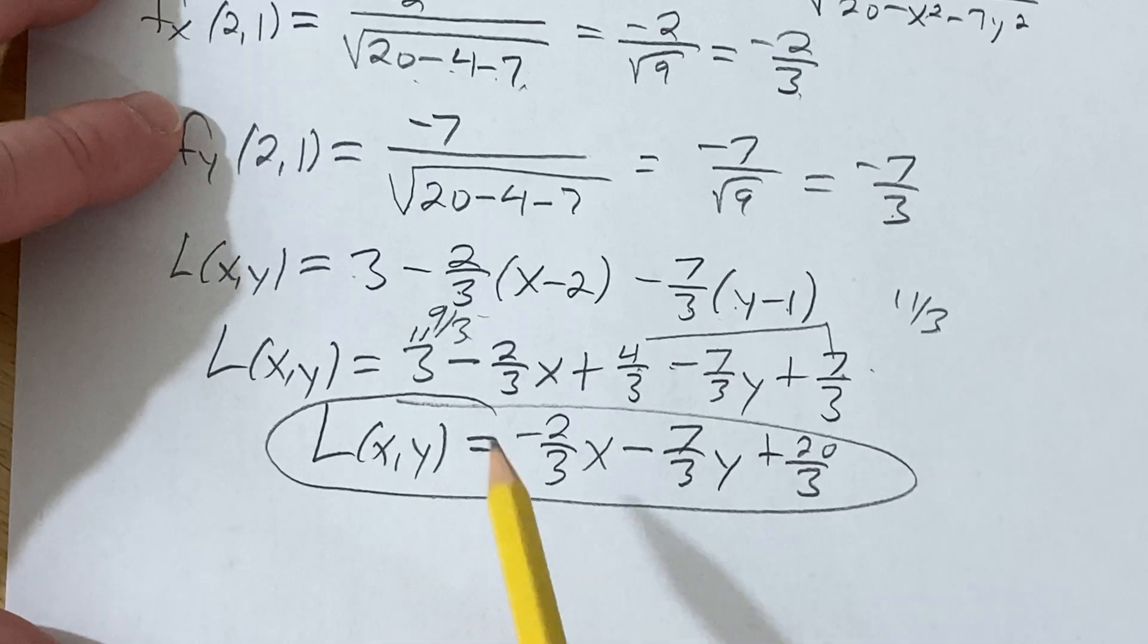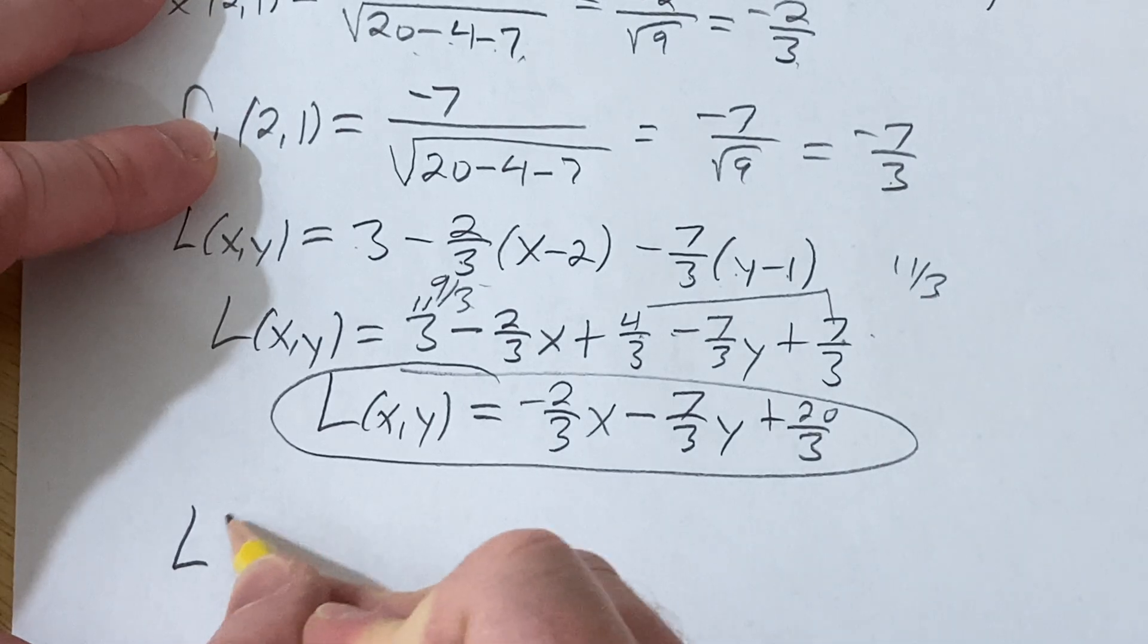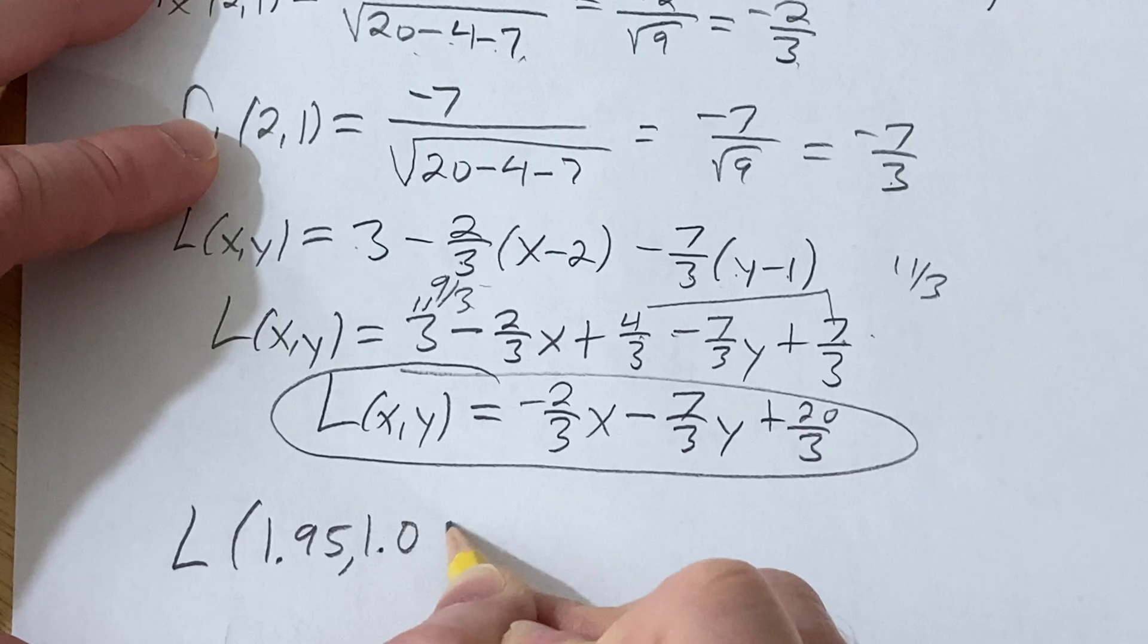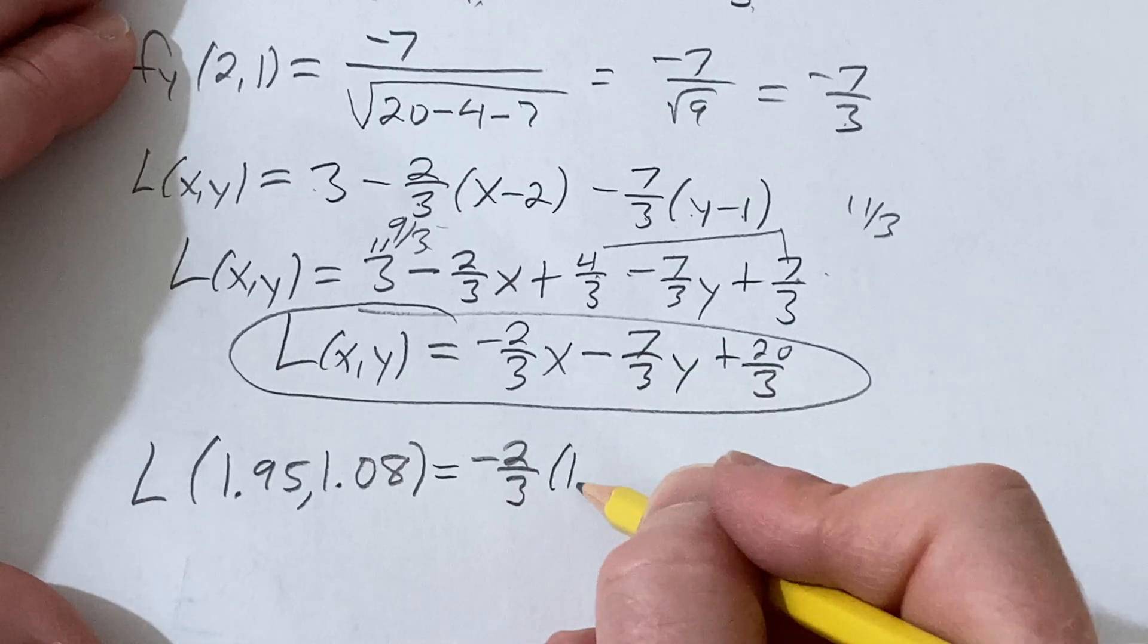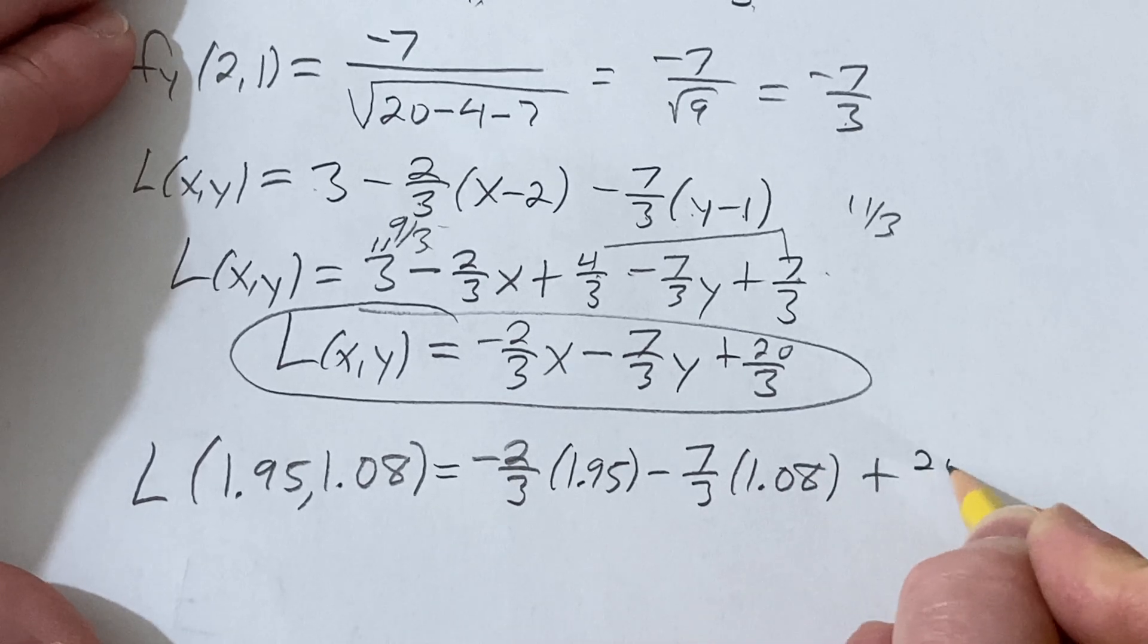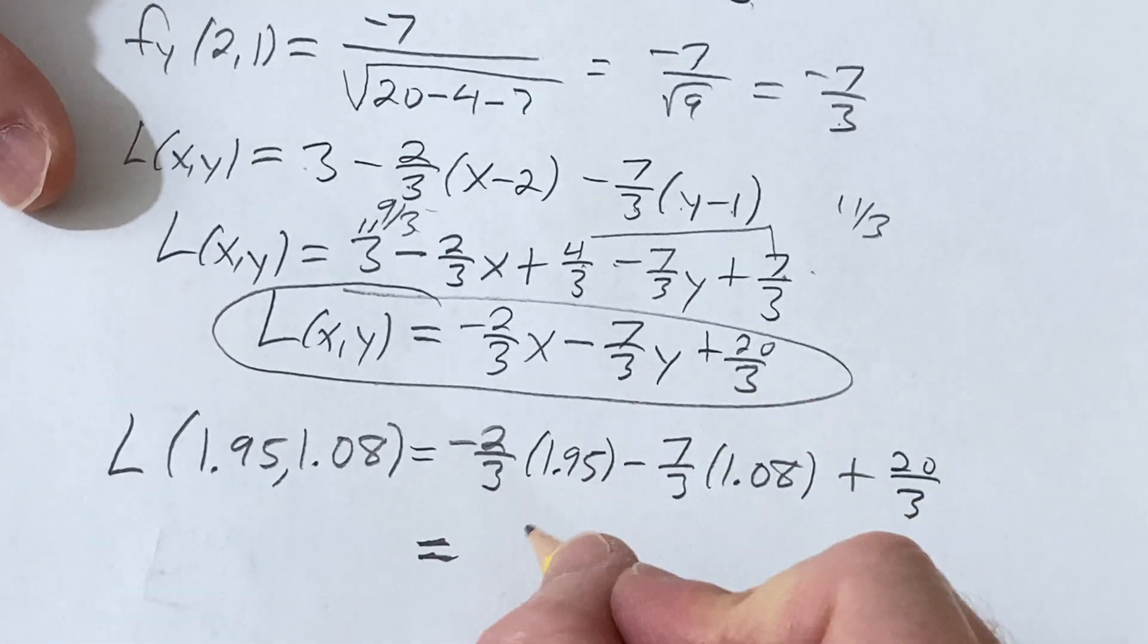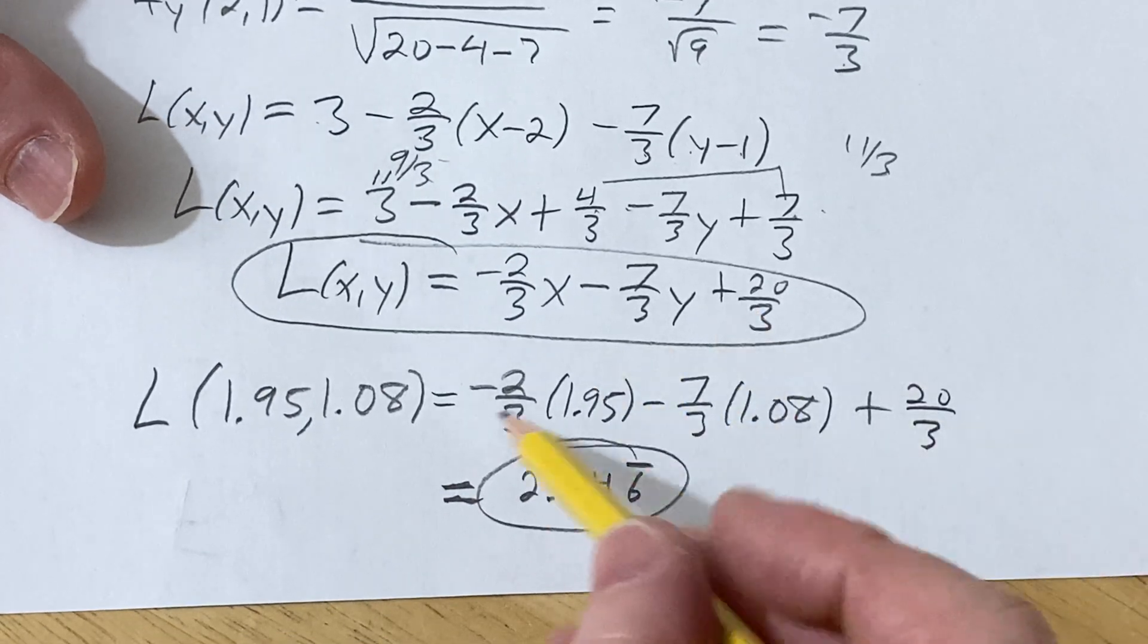Now we have to approximate f(1.95, 1.08). So if you plug in those numbers into the linear approximation, we get -2/3 times 1.95 - 7/3 times 1.08 + 20/3. And I've worked this out already in my calculator, here you get approximately 2.84 and the 6 repeats. So that would be the approximation.